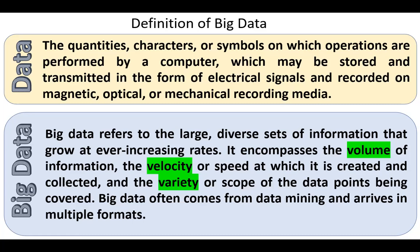Big data refers to the large, diverse sets of information that grow at ever-increasing rates. It encompasses the volume of information, the velocity or speed at which it's created and collected, and the variety or scope of the data points being covered. Big data often comes from data mining and arrives in multiple formats.